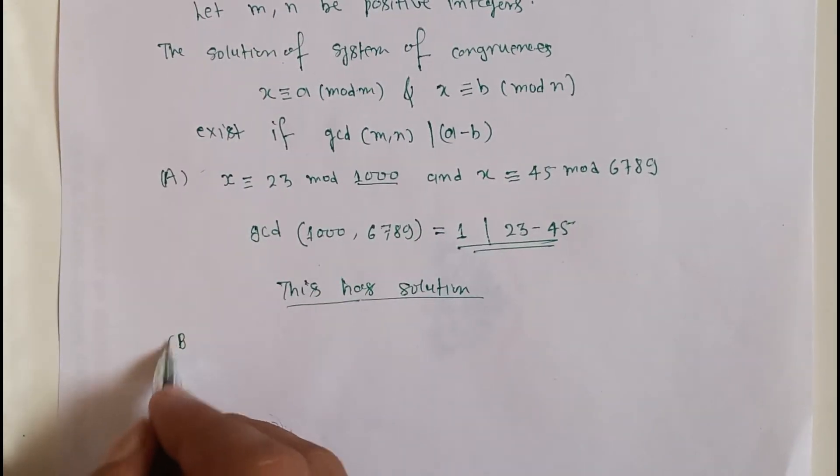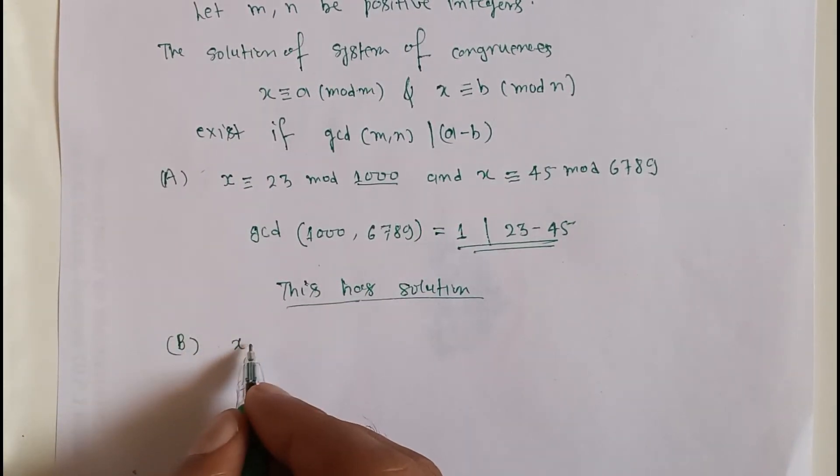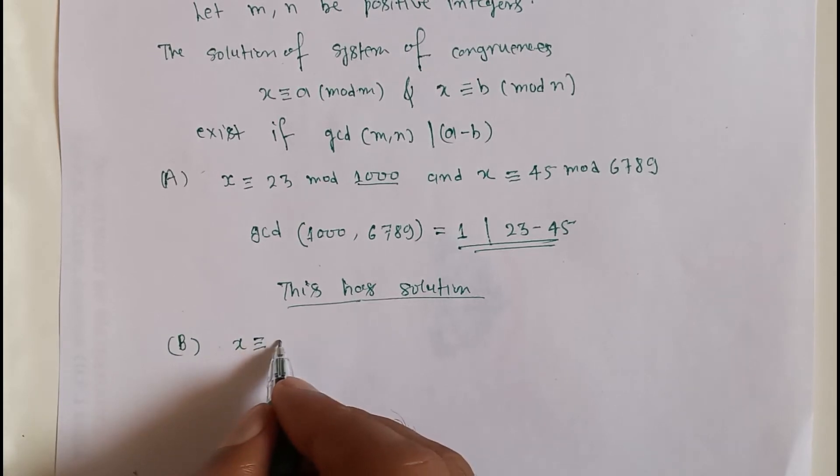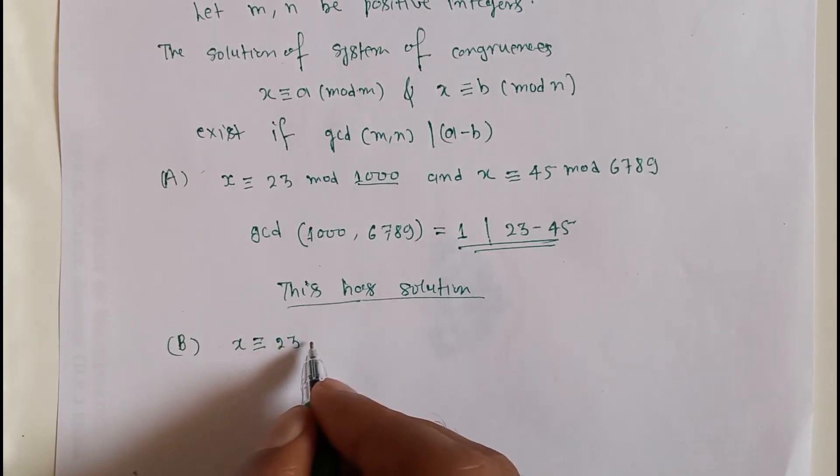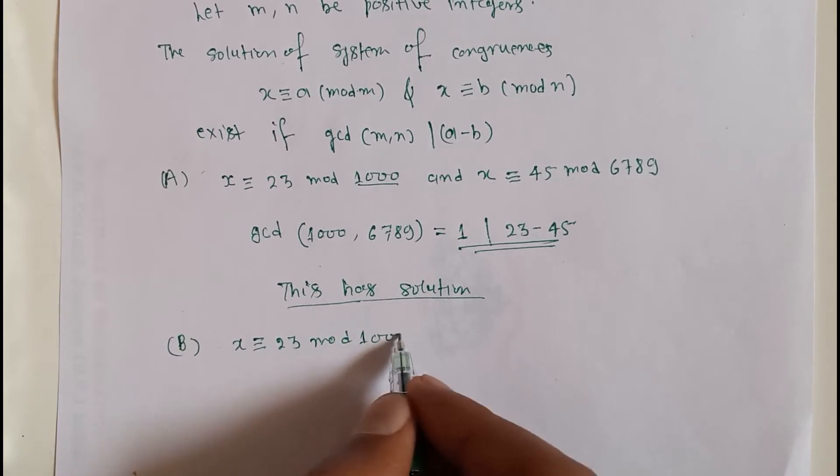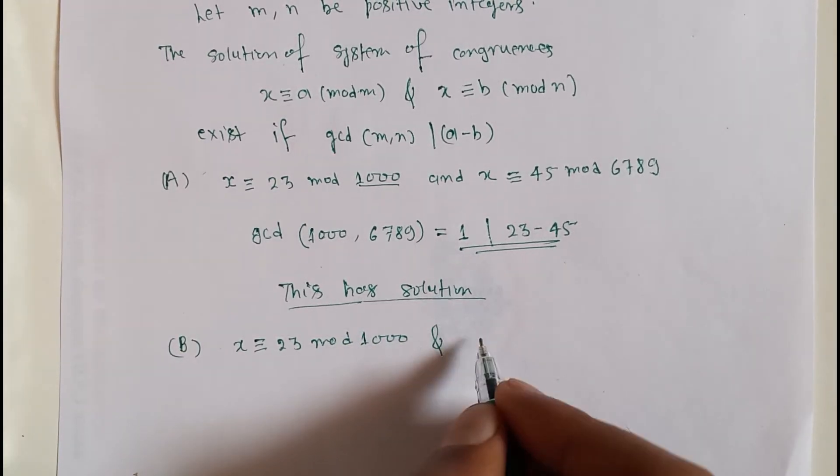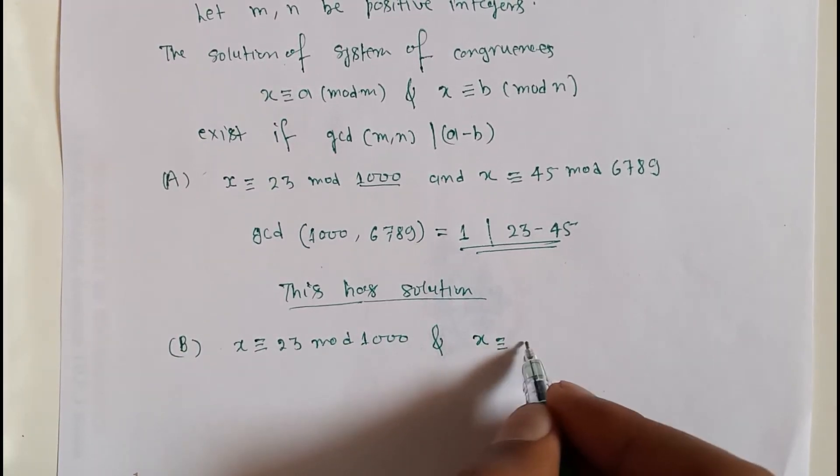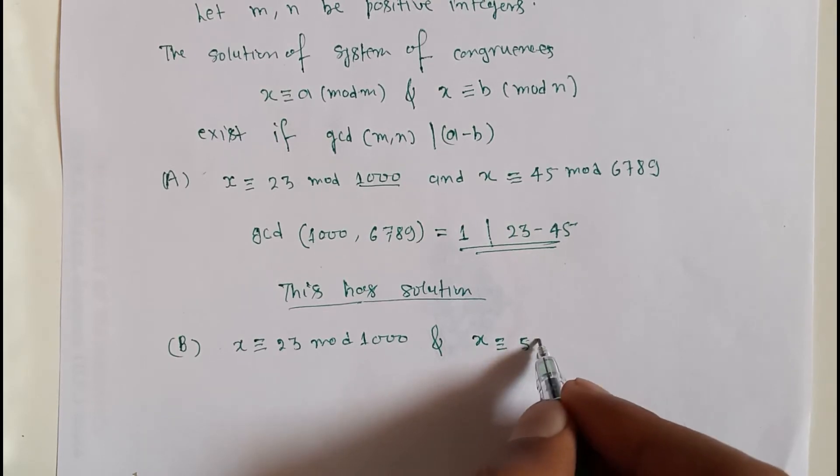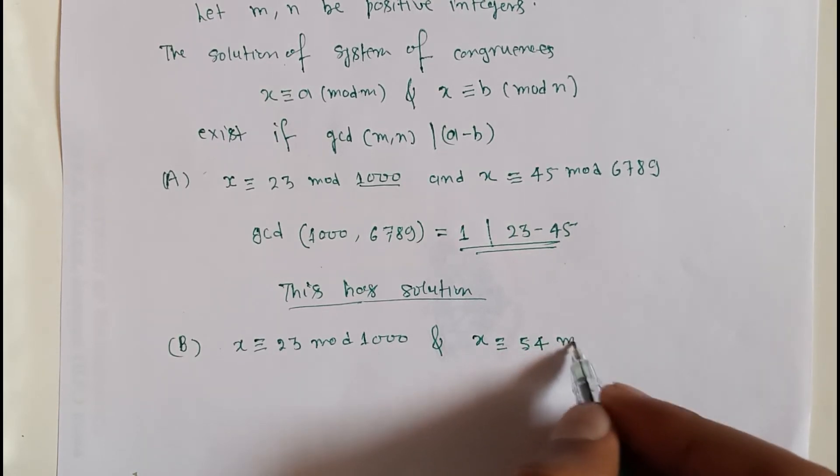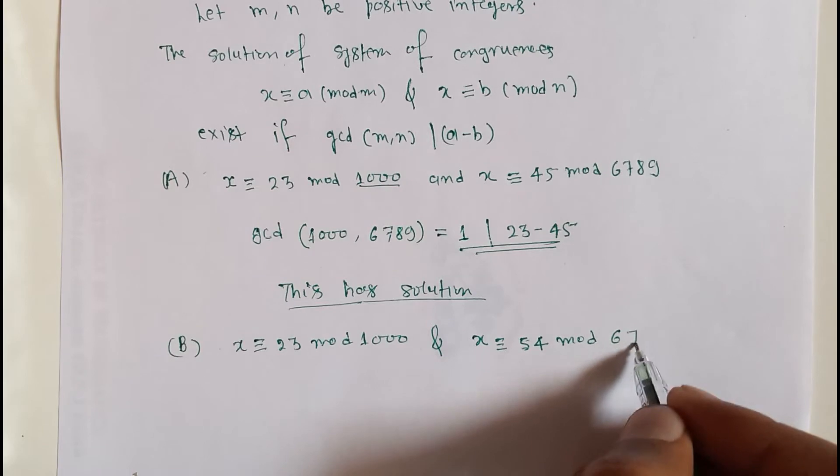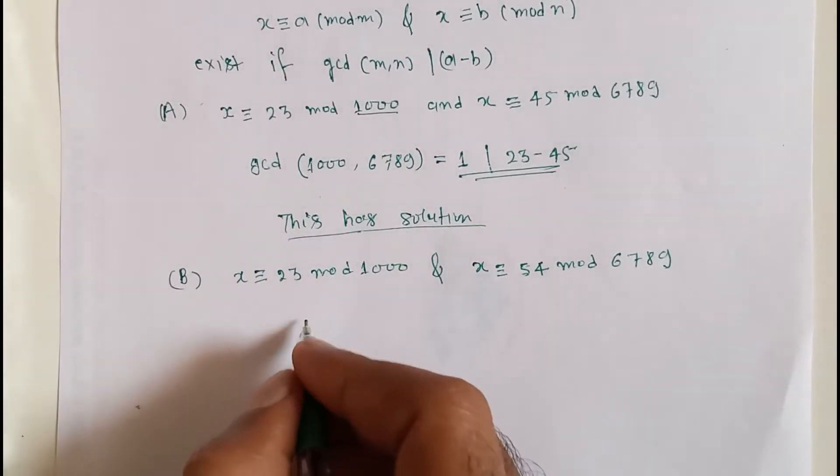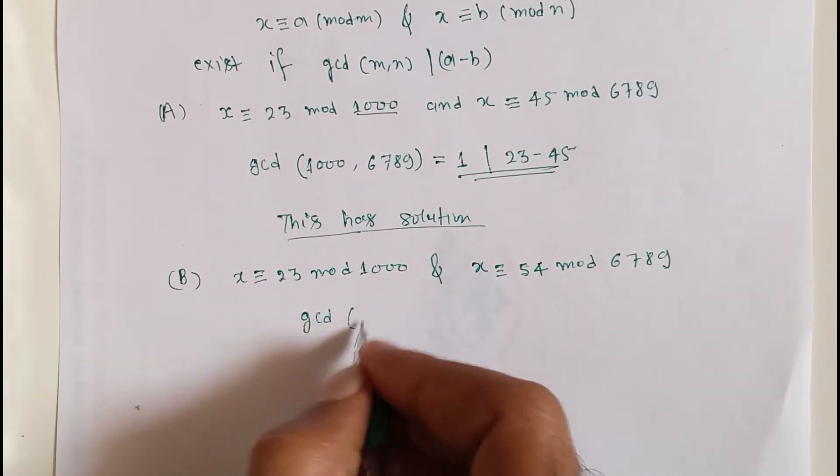Option B: x congruent to 23 mod 1000 and x congruent to 54 mod 6789. Here, the greatest common divisor of 1000 and 6789 is equal to 1.